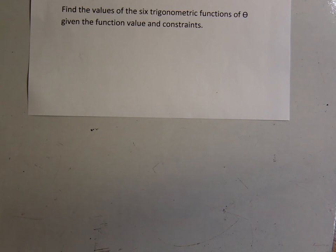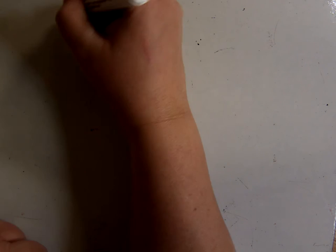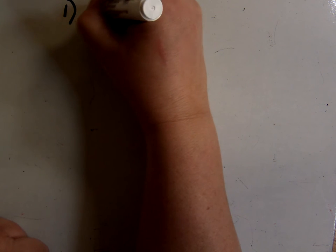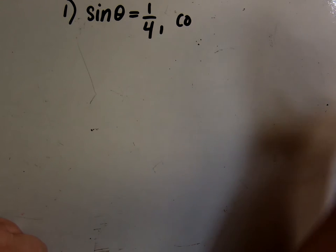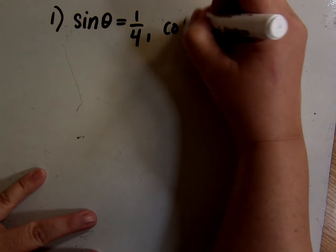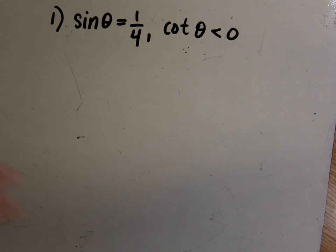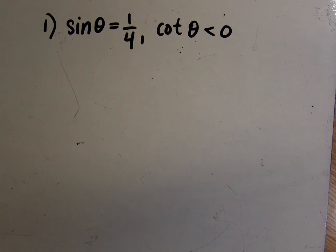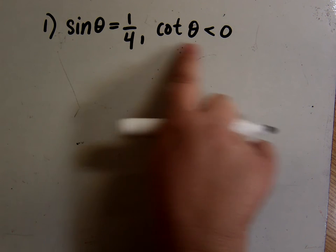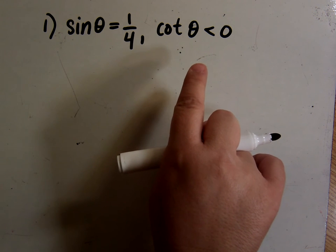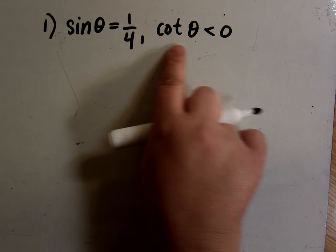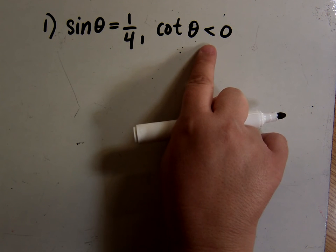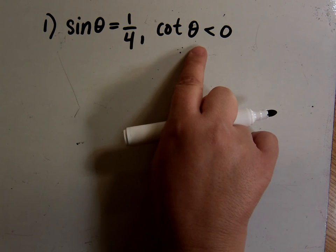Here's the type of thing they would give you — for instance, that sine of theta is 1/4 and the cotangent of theta is less than 0. So first, it's important to understand that less than 0 and greater than 0 are just saying positive versus negative. This is just telling me the cotangent is a negative number, and that only happens in certain quadrants — so this is a way of telling me what quadrant I'm in.